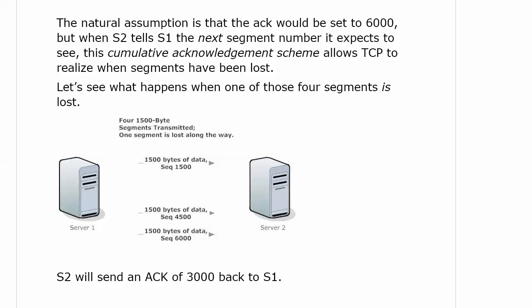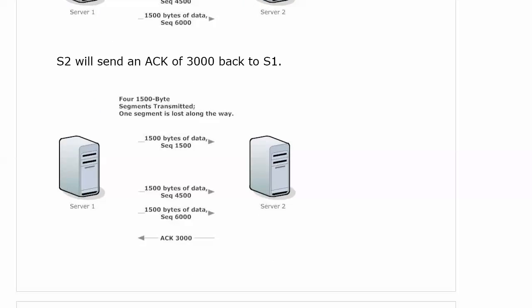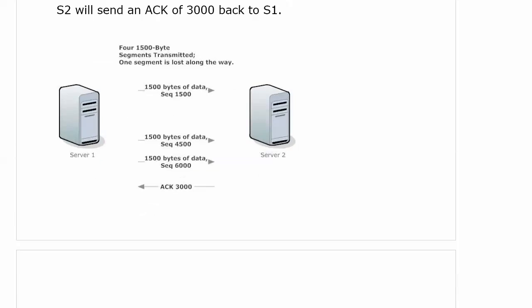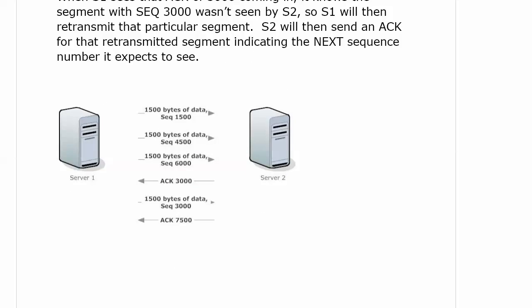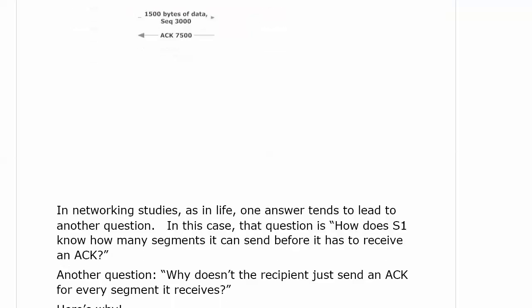In this next example, one of the segments got lost — the one with sequence 3,000. Server 2 is going to send an ACK of 3,000 back to server 1, basically indicating: you might have skipped one here because I'm expecting to see 3,000. When server 1 sees that ACK of 3,000, it knows the segment with sequence number 3,000 wasn't seen, so it will retransmit that particular segment. Then server 2 will send an ACK for the retransmitted segment indicating the next sequence number it expects to see.